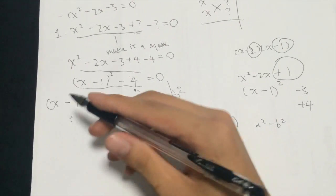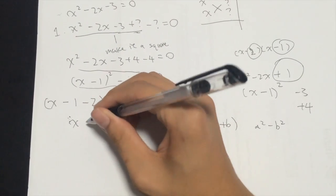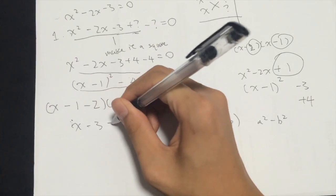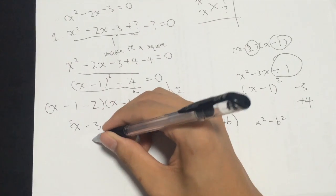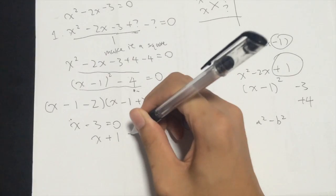So next step would just be find the value of x, where x minus 3 would be equal to 0 and x plus 1 would be equal to 0.